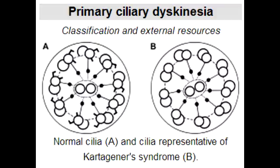What is Kartegener's Syndrome? Kartegener's Syndrome is a subset of primary ciliary dyskinesia, an autosomal recessive condition characterized by abnormal ciliary structure and/or function leading to impaired mucociliary clearance. This all occurs due to a dynein arm defect affecting the cilia.